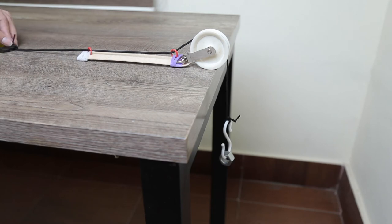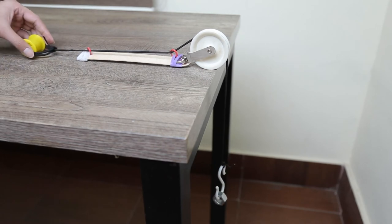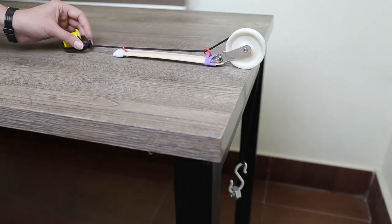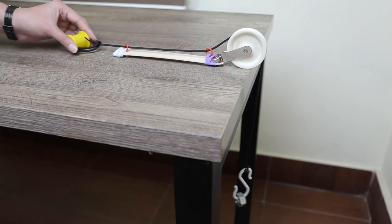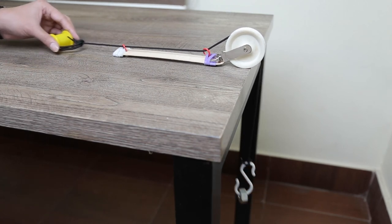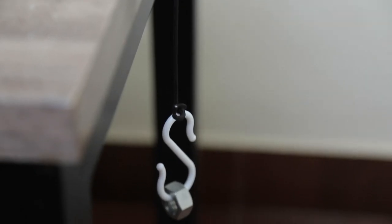Now place the craft stick crane on the edge of your table with the shoelace and hook hanging down the edge of the table. Slide the craft stick off the edge of the desk and feel the weight of the pulley pulling down on the craft stick.